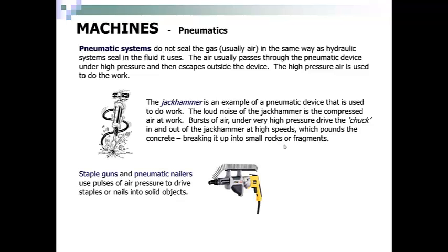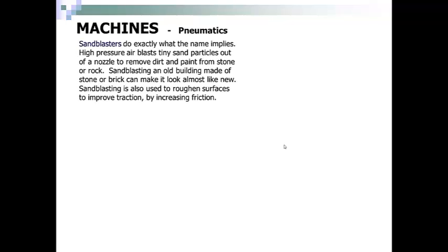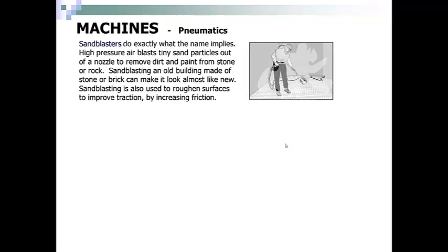Here we have staple guns and pneumatic nailers, which use pulses of air pressure to drive nails or staples into solid objects. Sand blasters do exactly what the name implies. High-pressure air blasts tiny sand particles out of a nozzle to remove dirt and paint from stone or rock. Sand blasting an old building made of stone or brick can make it look almost like new. Sand blasting is used to roughen surfaces to improve traction by increasing friction. So here we have sand blasting.